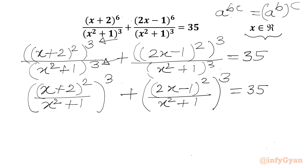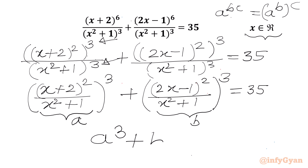Now I will consider our substitutions. Let a = (x+2)² / (x²+1) and b = (2x-1)² / (x²+1). The first equation we can write is a³ + b³ = 35.